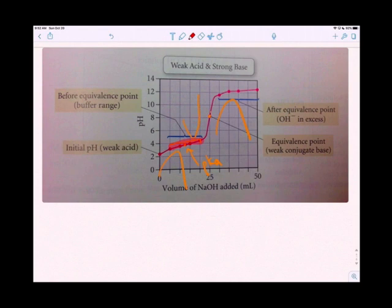Buffers only work over a range, and different buffers work for different ranges. Notice the equivalency point—this is above pH 7. For a weak acid and a strong base, the salt is going to be above pH 7. Remember when we talked about the acidic and basic natures of salts in the previous chapter? A weak acid/strong base makes an alkaline salt, so it's above pH 7.